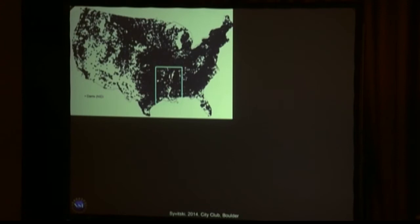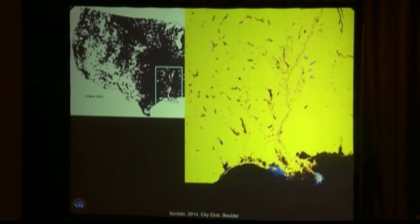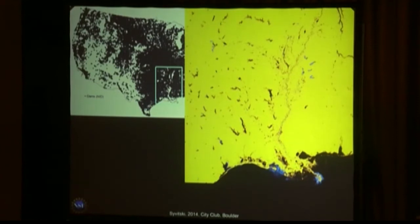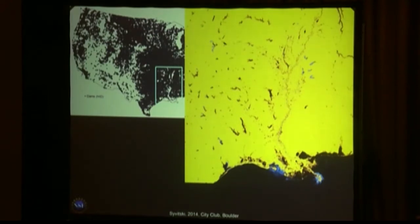I've zoomed into a box with a satellite image processed to show all the water within that area. You can see the Mississippi River coming down to the Mississippi Delta — barely. But all those other black areas are reservoirs behind the dams, sometimes shown in light blue. They are trapping sediment that would otherwise get to the coastline.